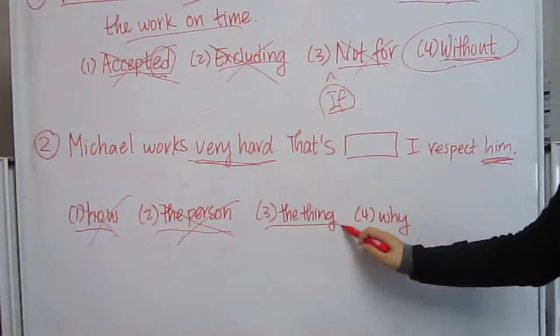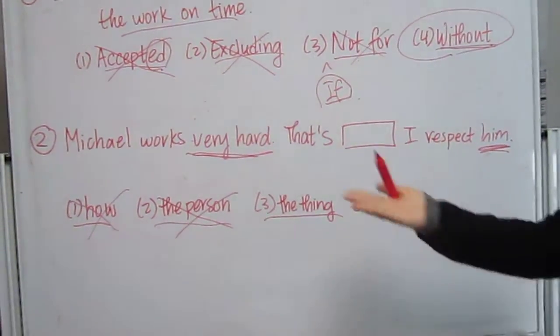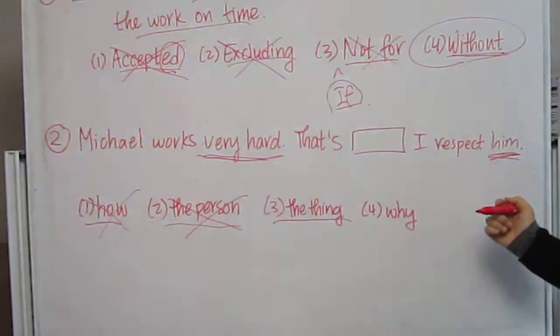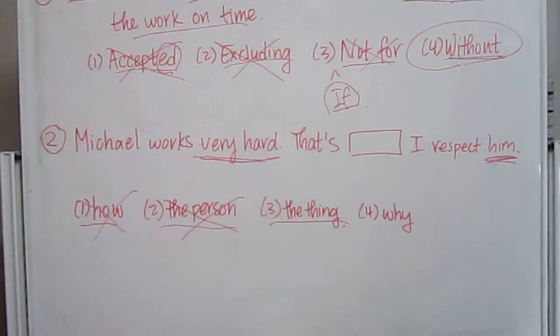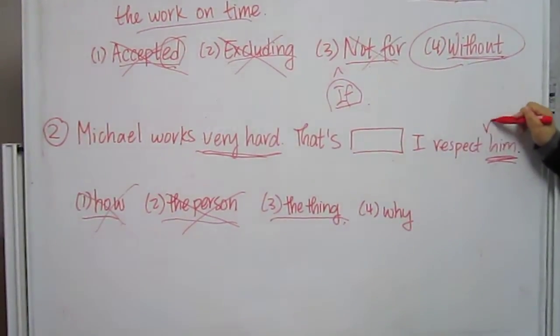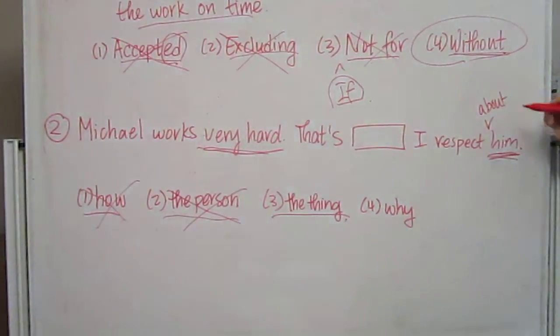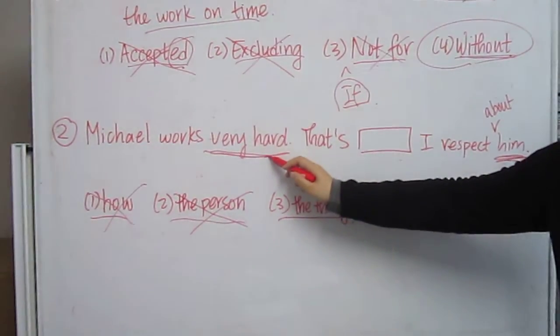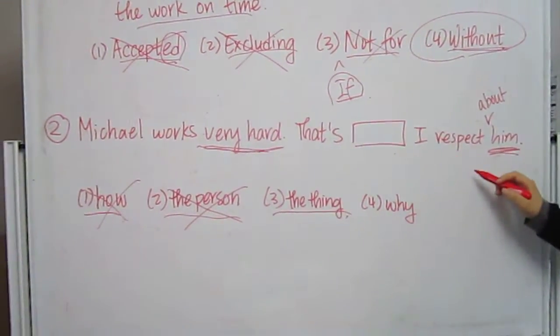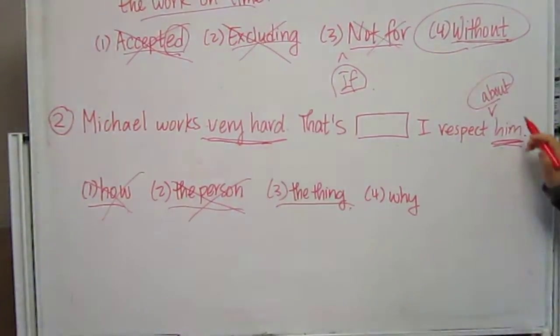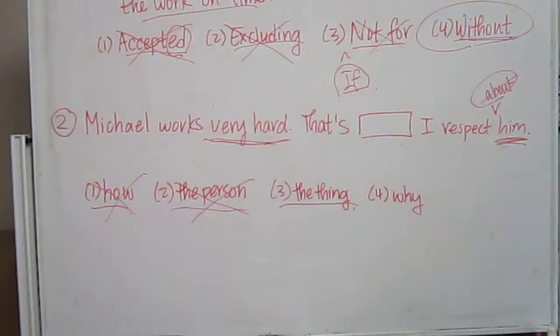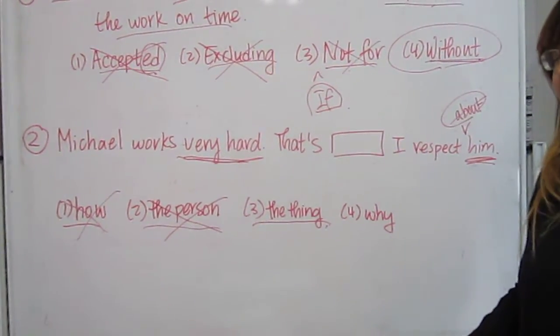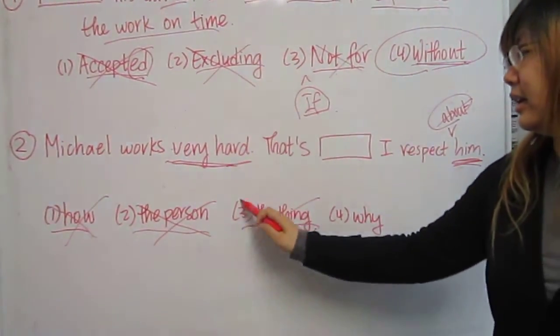The next answer says, the thing. Michael works very hard. That's the thing, I respect him. Now, this word can also be used if they have written about. That's the thing, which refers to his characteristic. That's the thing, I respect about him. But they didn't have this word in the original question. So even though it might make sense, it could possibly make sense, in this sentence it doesn't because the grammar isn't right.